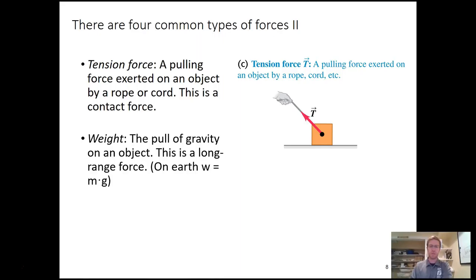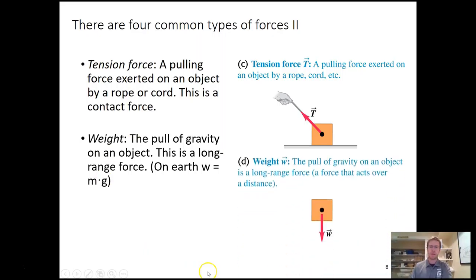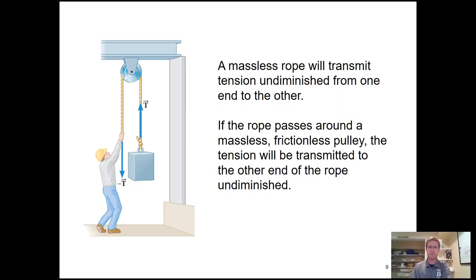Tension force is a pulling force, usually from a rope or cord — it's a type of contact force. Weight is the force that results from the acceleration due to gravity. A lot of times people get confused between weight and mass, but weight is defined as mass multiplied by the acceleration due to gravity. So a 10-kilogram mass would have a weight of 10 kg × 9.8 m/s², which equals 98 newtons worth of force.